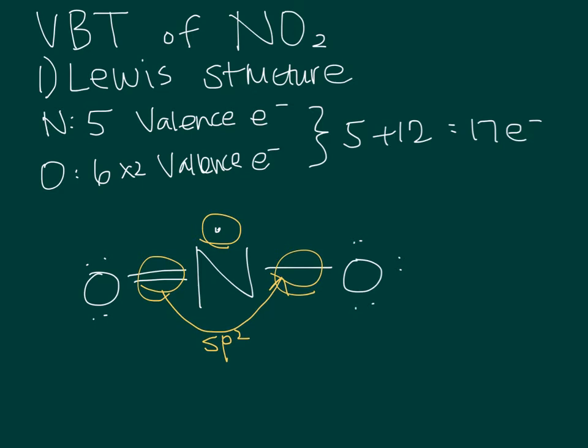Knowing the sp2 hybrid orbital hybridization, we're going to know that this is going to be a trigonal planar electron geometry. But because of this freestanding electron, it's going to push down, because the electron repulsion strength is much greater than that of the bonding pairs. So we're going to have a bent shape for our molecular geometry.